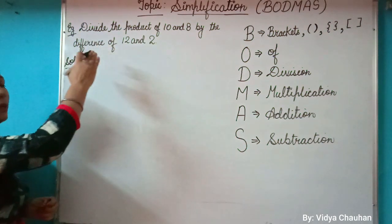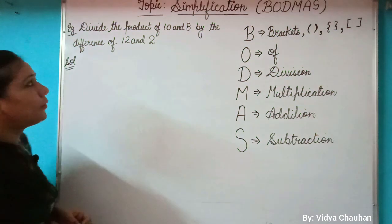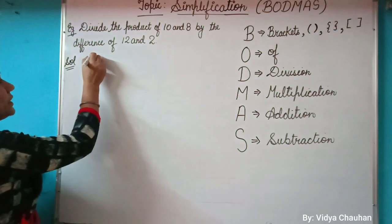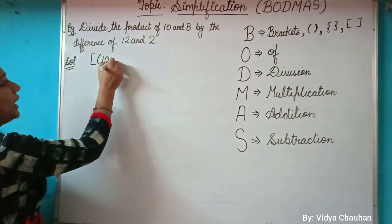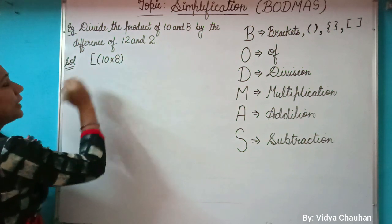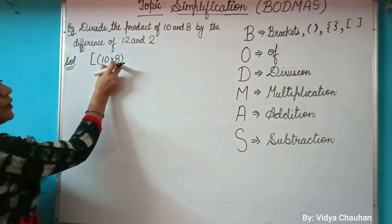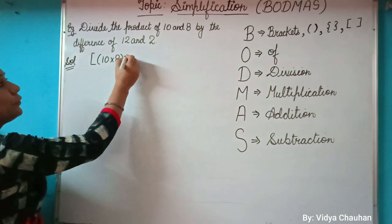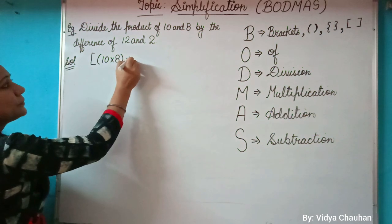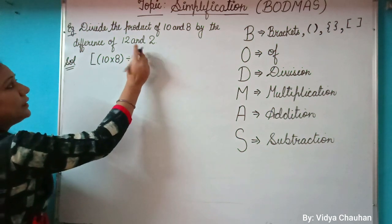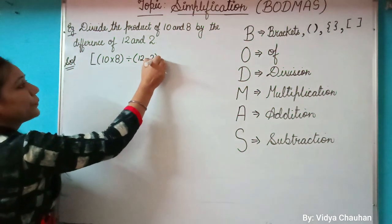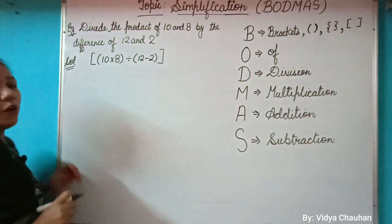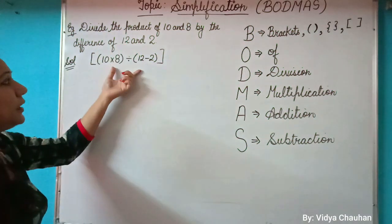will write this word problem in the numerical format. The numerical format says we have to find the product of 10 and 8, and then this product of 10 and 8 we have to divide by the difference of 12 and 2. So this is how you can write the same word problem in the numerical format.